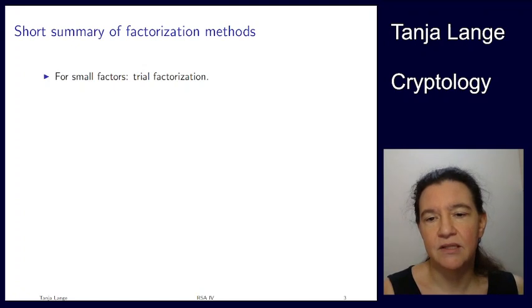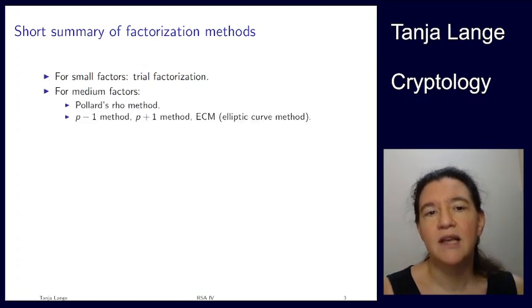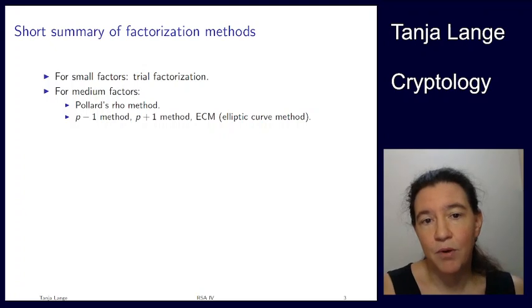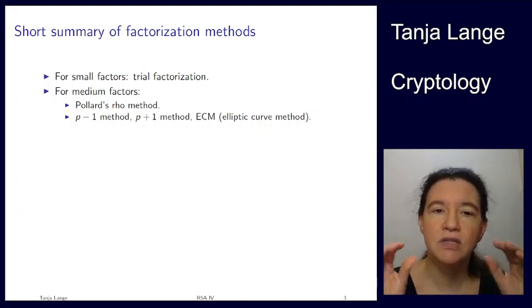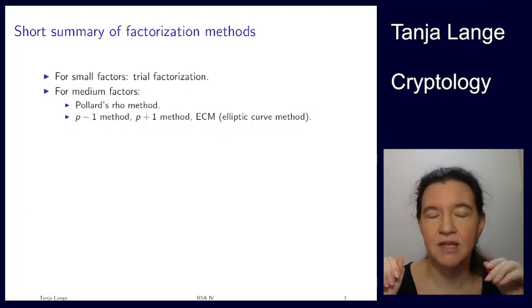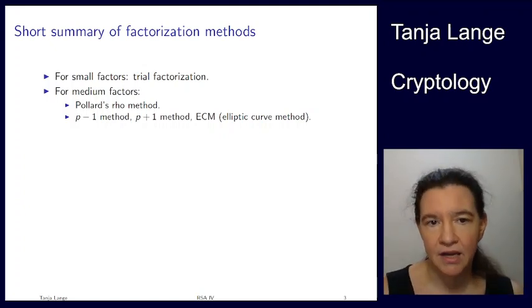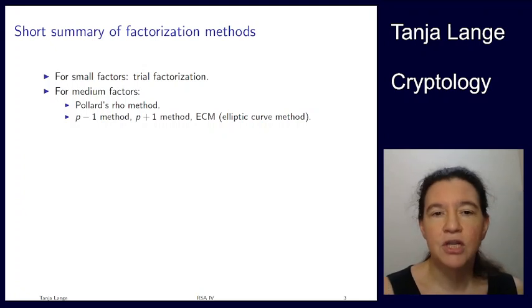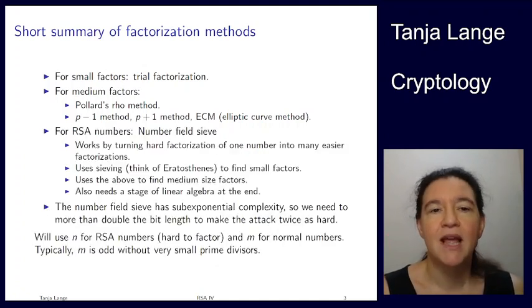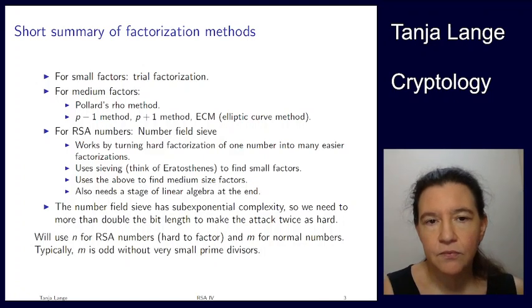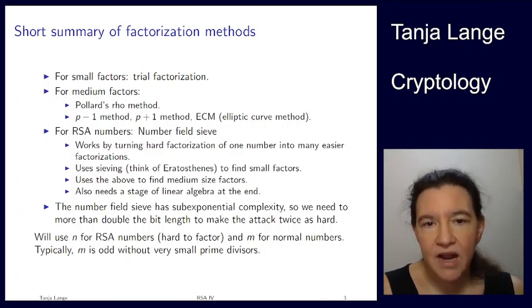When you're looking at RSA numbers, we actually have a whole lot of machinery in there. We're going to look through different types of factorization methods. Trial factorization, not going to expand on that more, but that takes care of all small factors. Then there's a batch for medium factors. We're going to see next the Pollard rho method. Yes, another Pollard. And we're going to see in the other video, video 5, the p-1, p-plus-1, and elliptic curve method of factorization. Those are good for medium-sized factors. This is still not what you use for breaking RSA numbers.